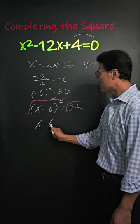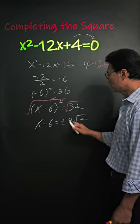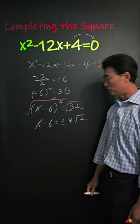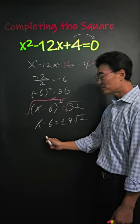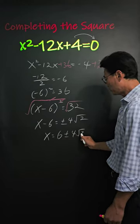This gives us x minus 6 equals plus or minus 4 root 2 when we simplify root 32. Finally, add 6, so we get x equals 6 plus or minus 4 root 2.